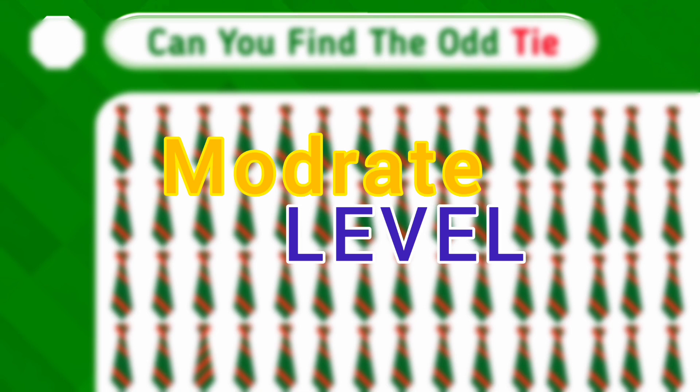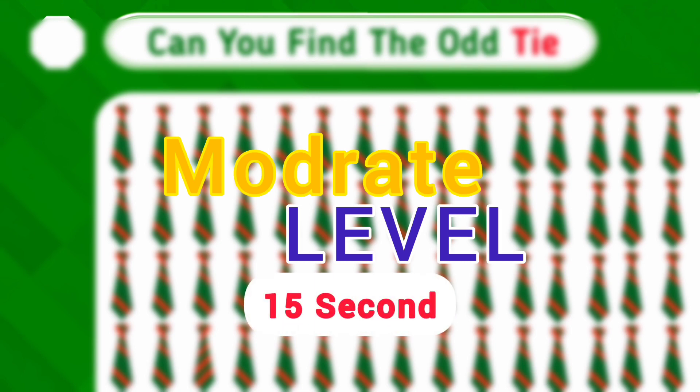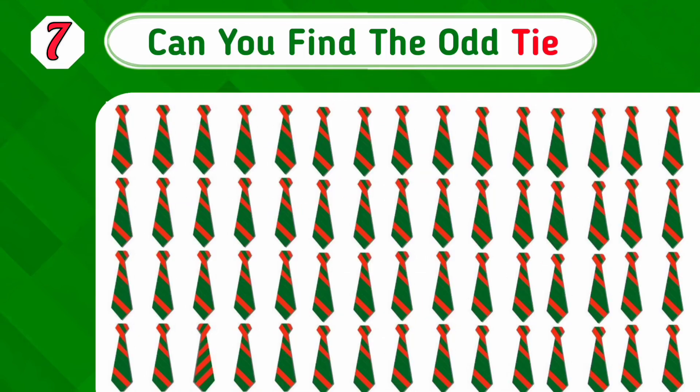There are moderate levels from 7 to 12. And now you have 15 seconds. Find the odd tie.